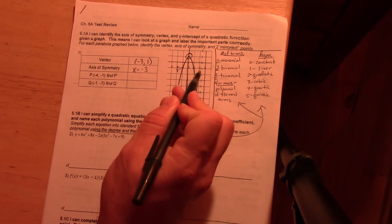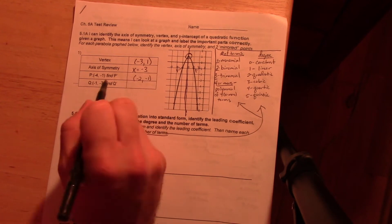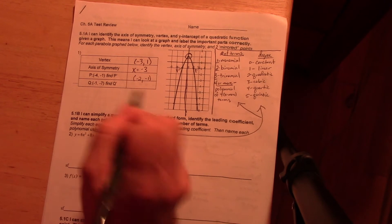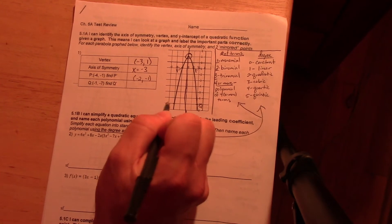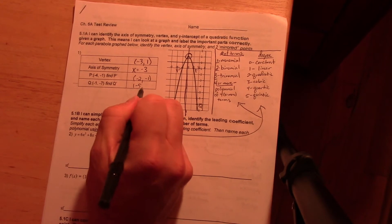So four, negative one right here is P. So they want to know what P prime is, which is negative two, negative one right there. They should always have the same y value. They're saying they want this to be Q. So Q prime very simply is negative five, negative seven. Okay?